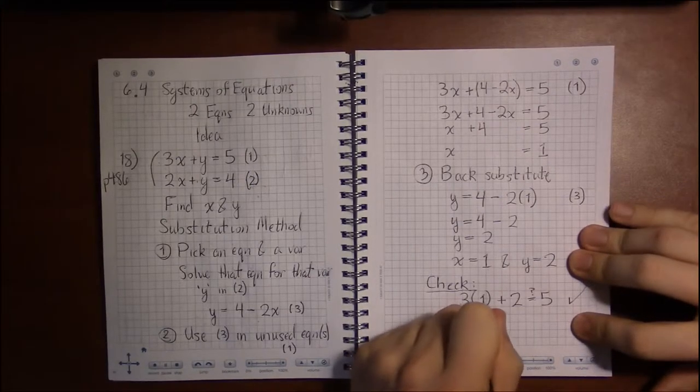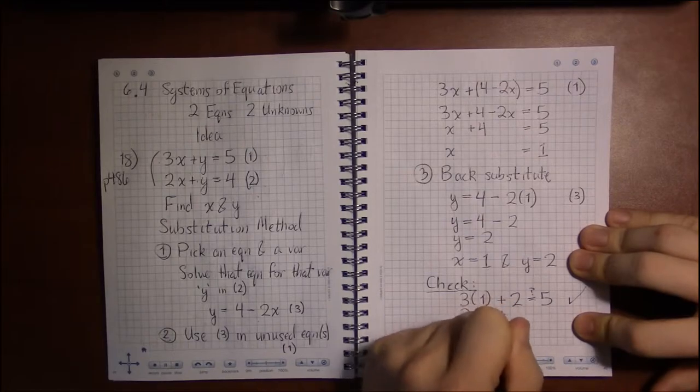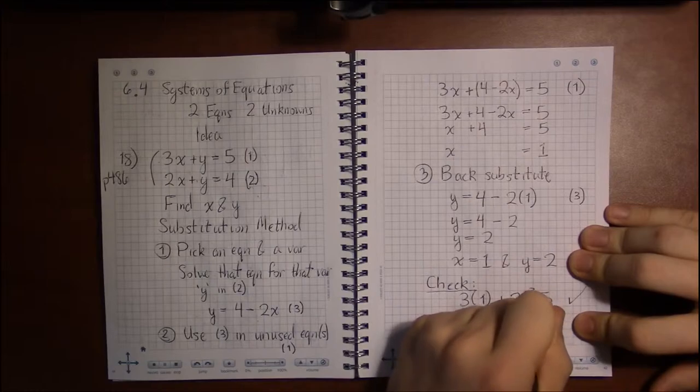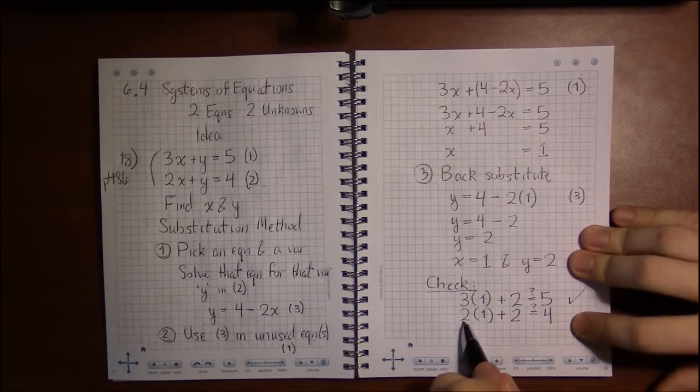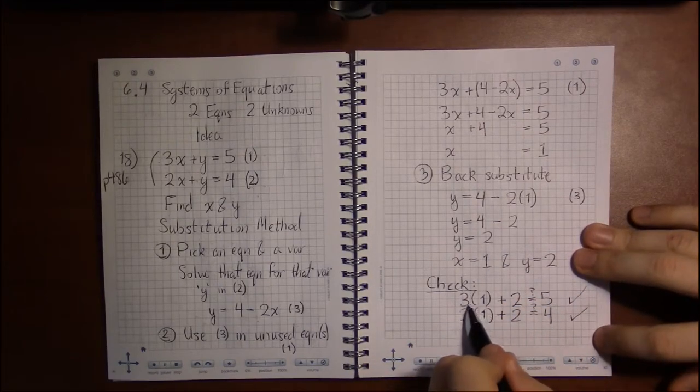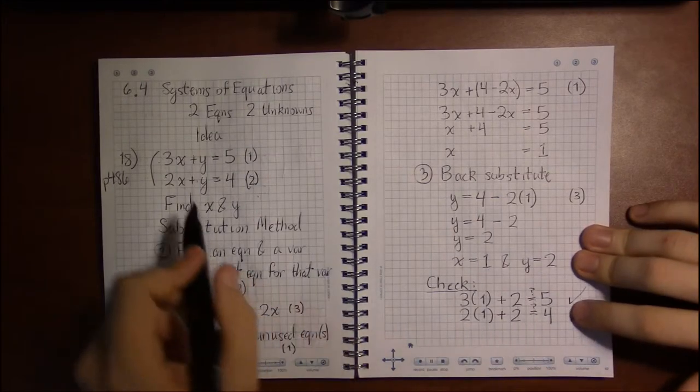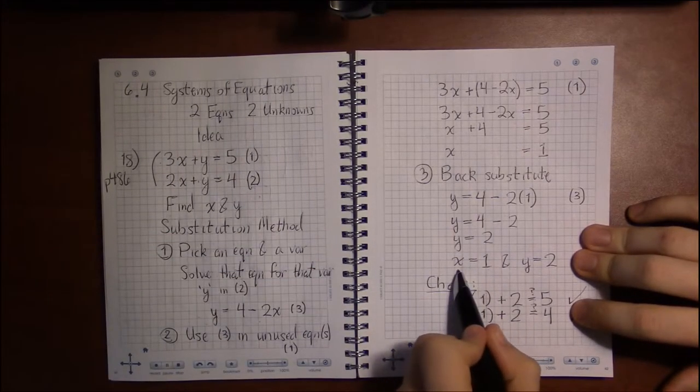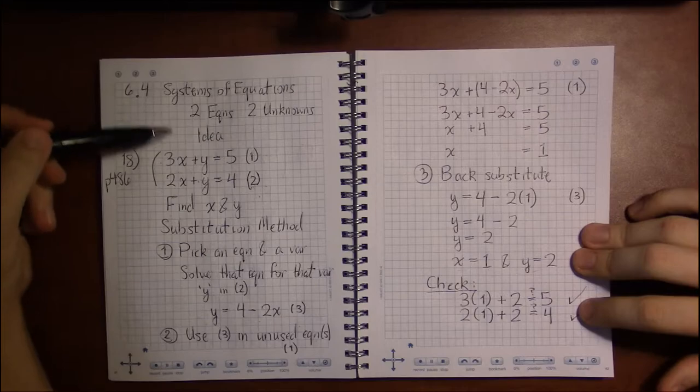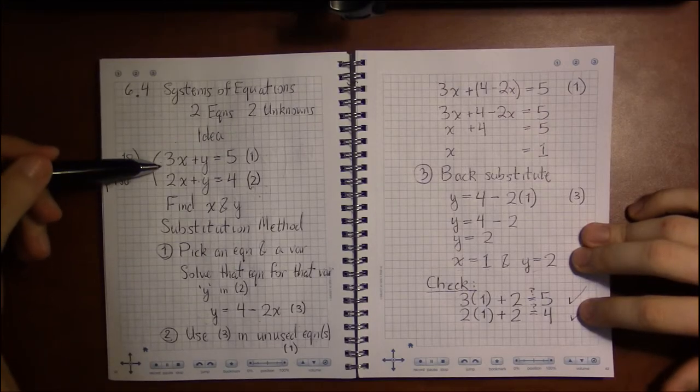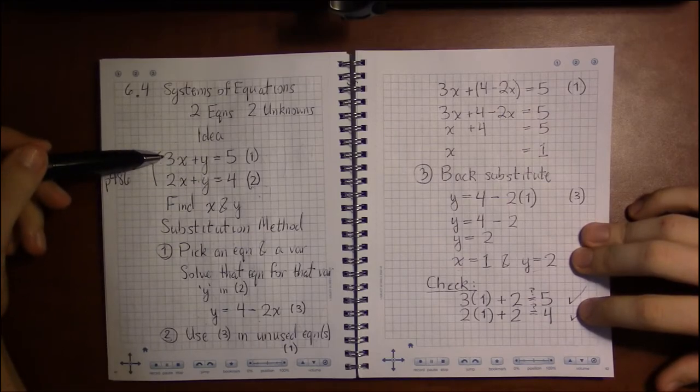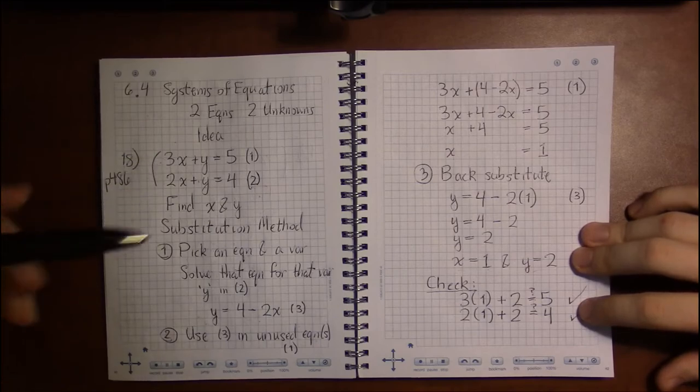So if we do two times one plus two, is what's on the left, is that the same thing as four? Two times one plus two, two plus two, yeah, that's four. So everything checks out. Both equations turn out to be true when you let x be one and y be two. That's what we mean when we say solve a system of equations. Find the values for the variables involved that make all the equations true at the same time.